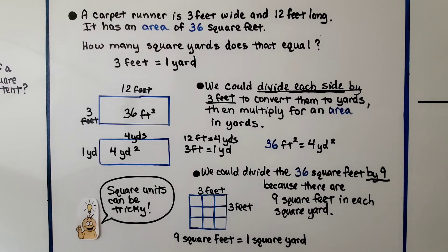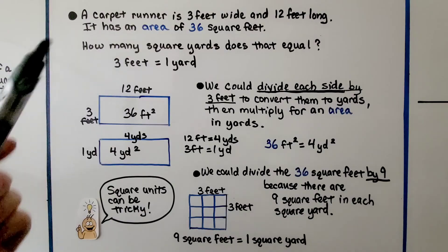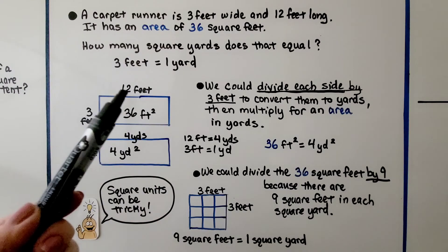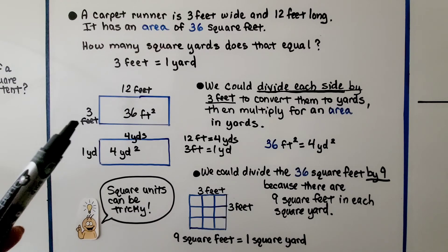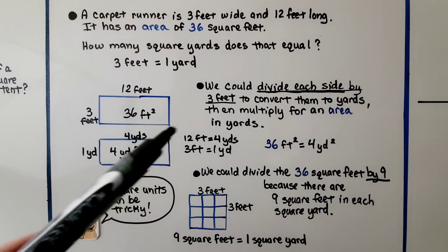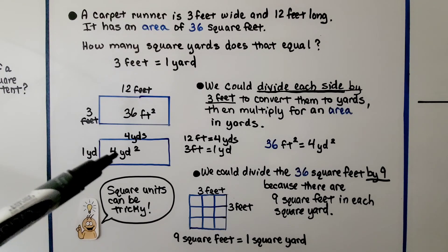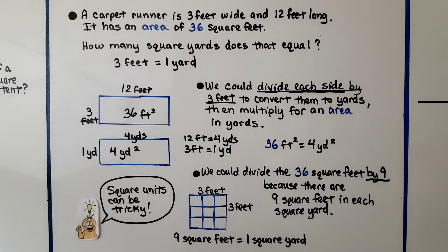Before we finish this lesson, I want to show you something that might help you. This says a carpet runner is 3 feet wide and 12 feet long. It has an area of 36 square feet. 3 times 12 is 36. How many square yards does that equal? So we're going to switch it from square feet to square yards. When we know 3 feet equals 1 yard, we could divide each side by 3 feet to convert them to yards, then multiply them for an area in yards. 12 feet would be 4 yards, and 3 feet would be 1 yard. We have 1 yard by 4 yards, and 4 times 1 is 4 yards squared.